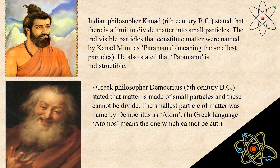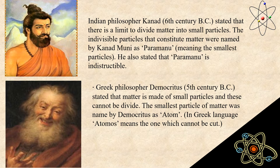Before that, there was a Greek philosopher, Democritus, who in the 5th century BC stated that matter is made up of small particles and these cannot be divided. The smallest particle of matter was named by Democritus as atom. In Greek language, atom means the one which cannot be cut.